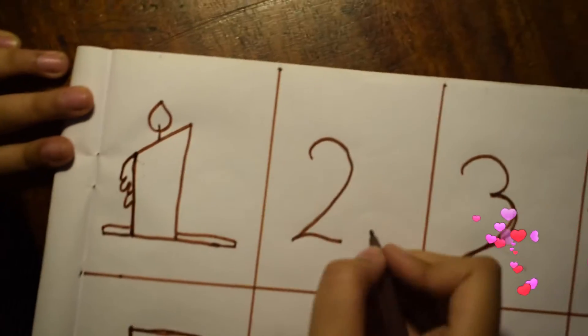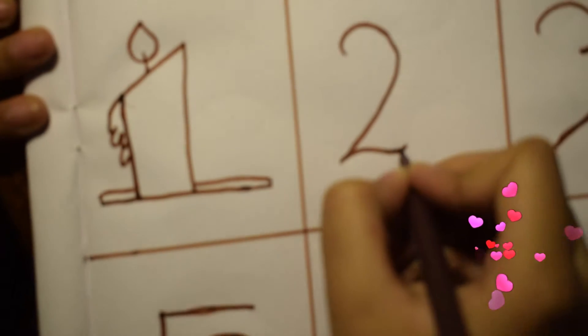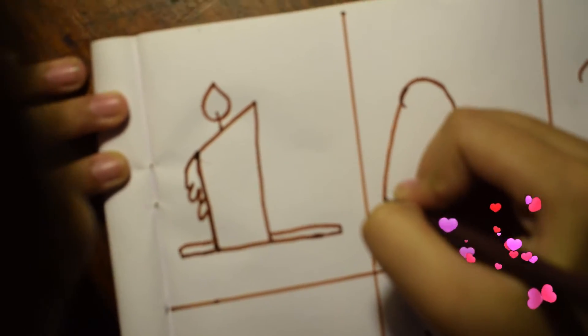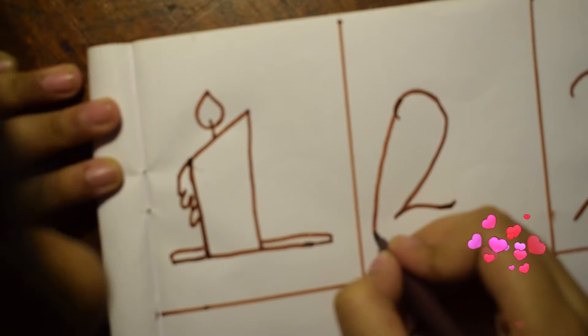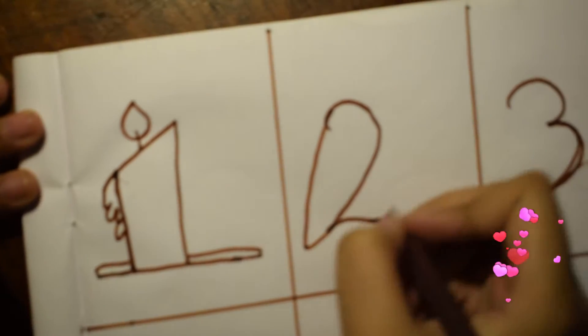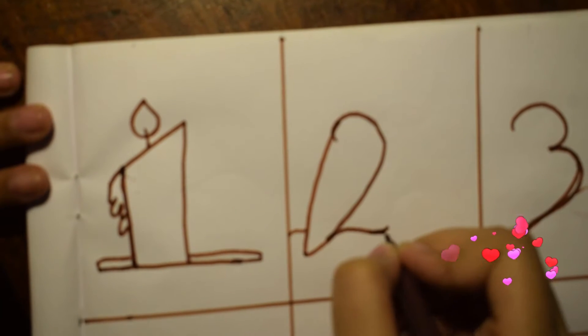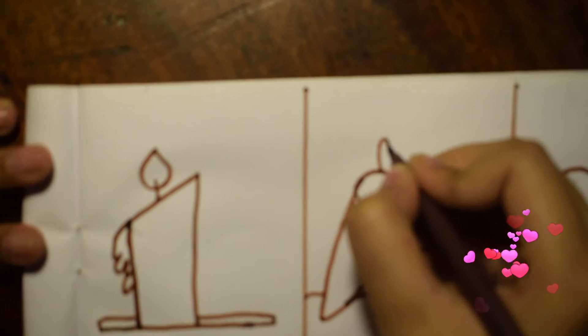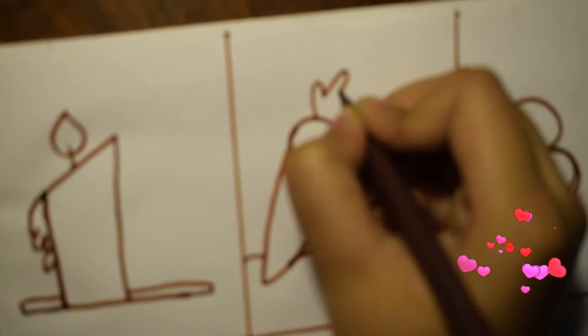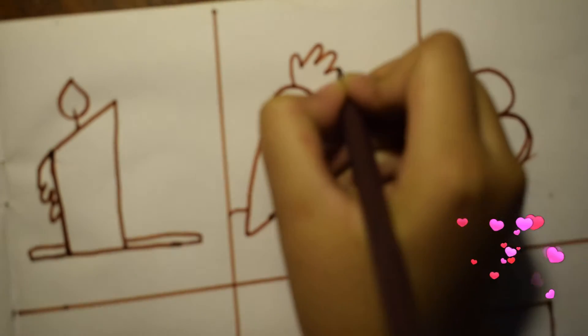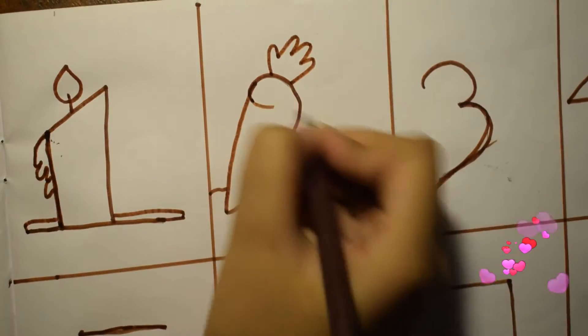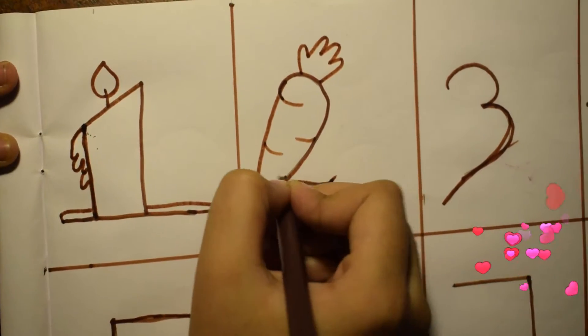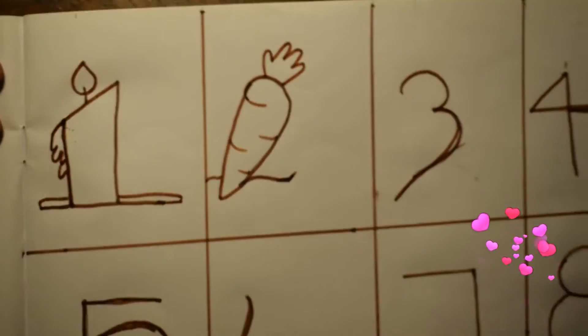Let's go to number two. This is our number two. We'll turn it into a carrot. Long line and curve it. We'll make it a little mud. And yes, the leaf on top. And some lines. Yes. Our carrot is ready. Wow. Super.